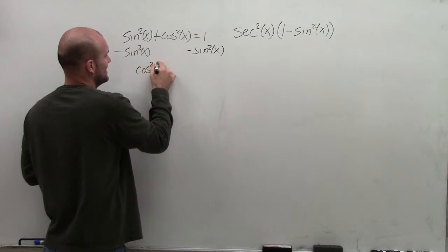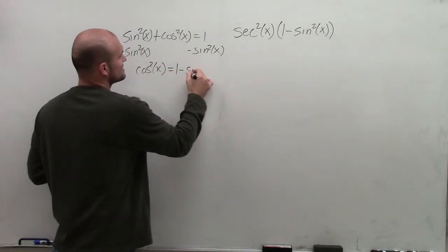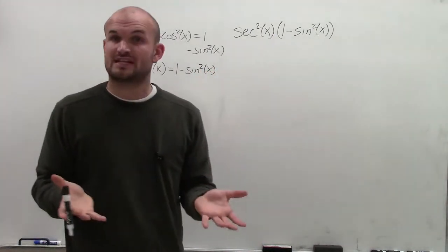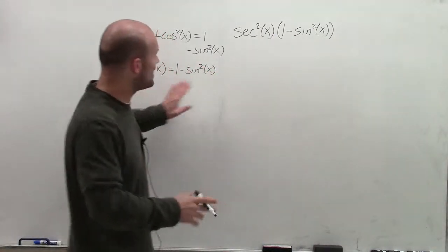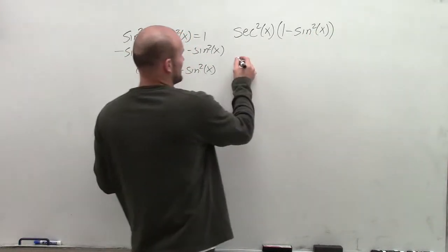And now, since they're not like terms, I can't combine them. But I'll get cosine squared of x is equal to 1 minus the sine squared of x. So the Pythagorean identities are very helpful when we can transform them. Because now, rather than writing the 1 minus sine squared of x, I can just simply write cosine squared of x.